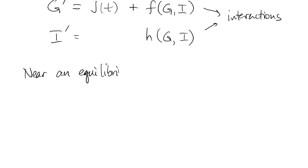Now, it so happens that if you're close to an equilibrium, so sort of a stable solution or stable values of g and i, then we can look back at vector calculus and do a linearization, or a linear approximation, of a function of two variables.